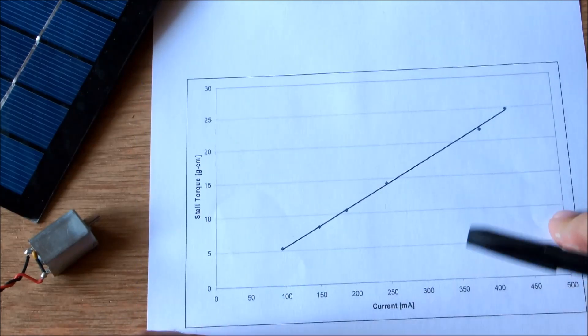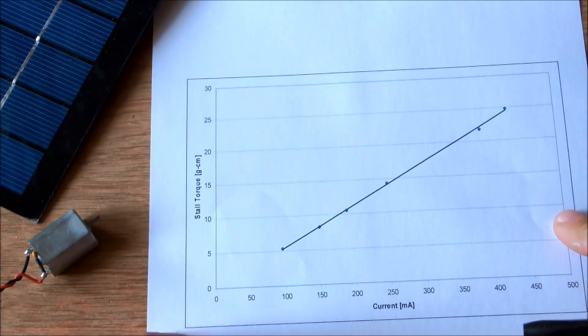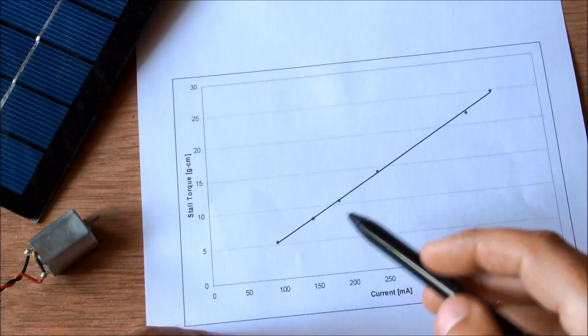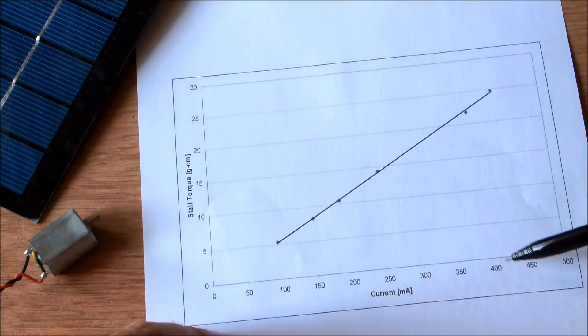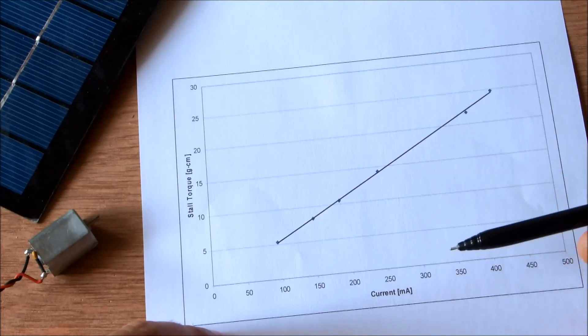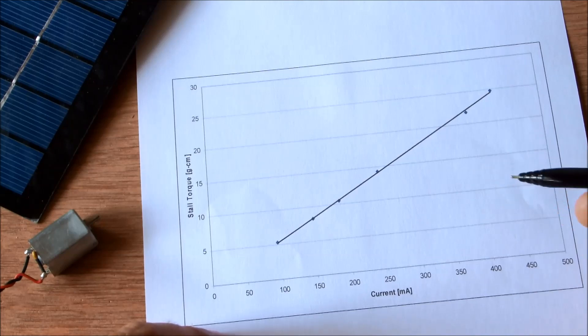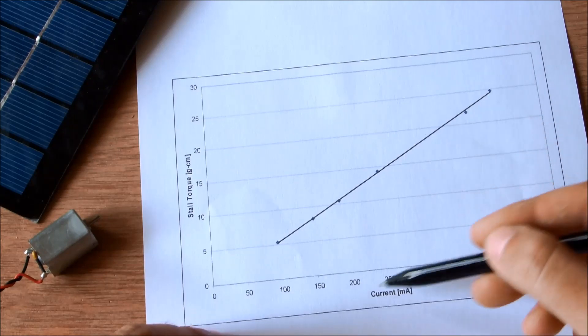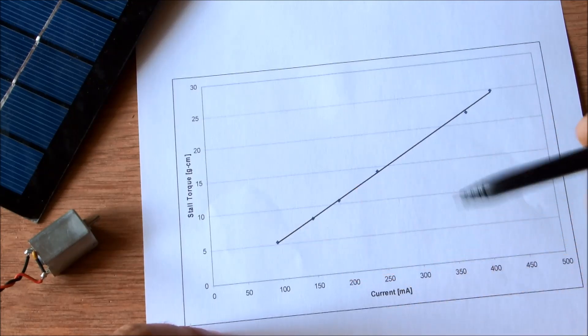This is the results from testing stall torque. And you can see there's a very nice linear relationship between torque and current, which is exactly what you would expect because a typical brushed DC motor would have a torque constant. And that gives you the relationship between current and torque.